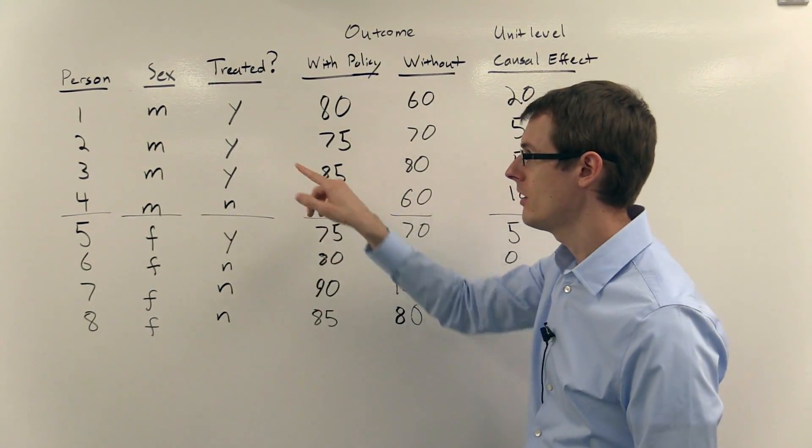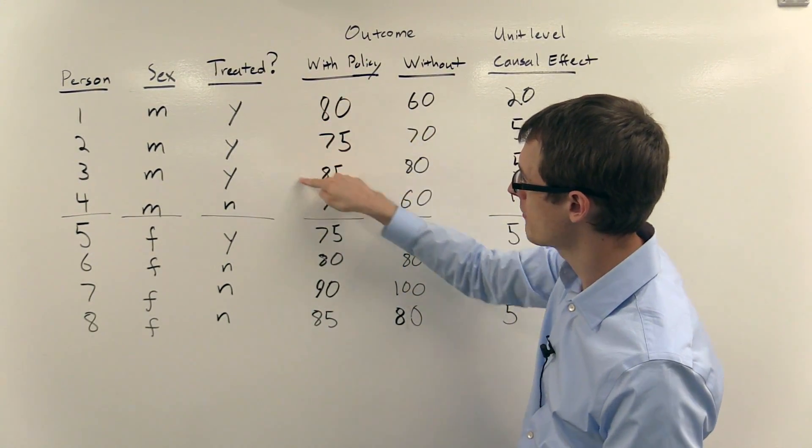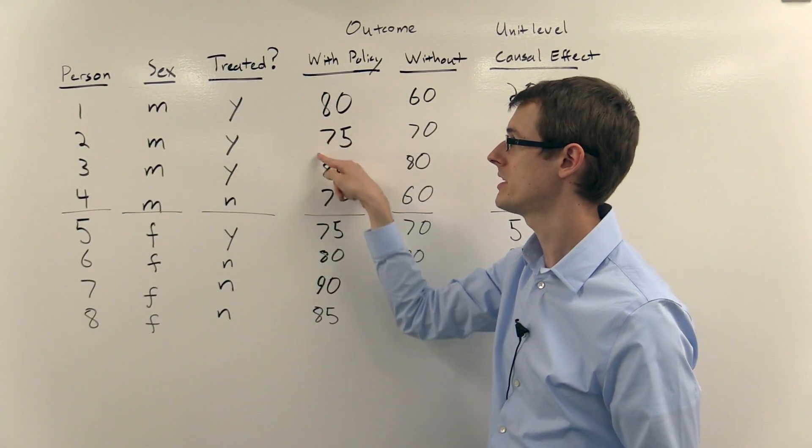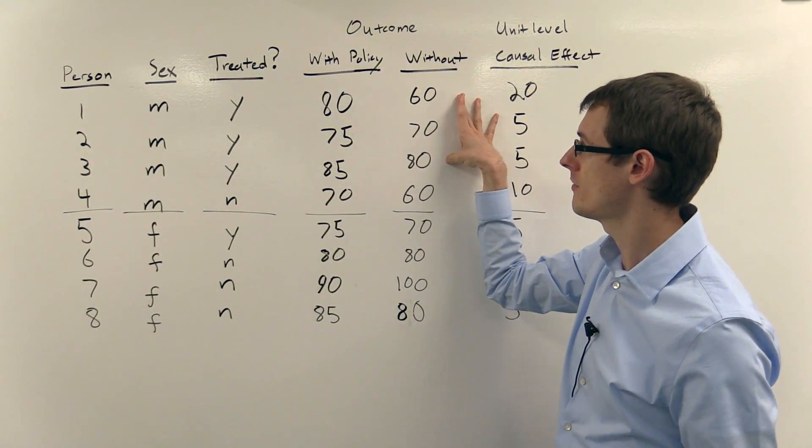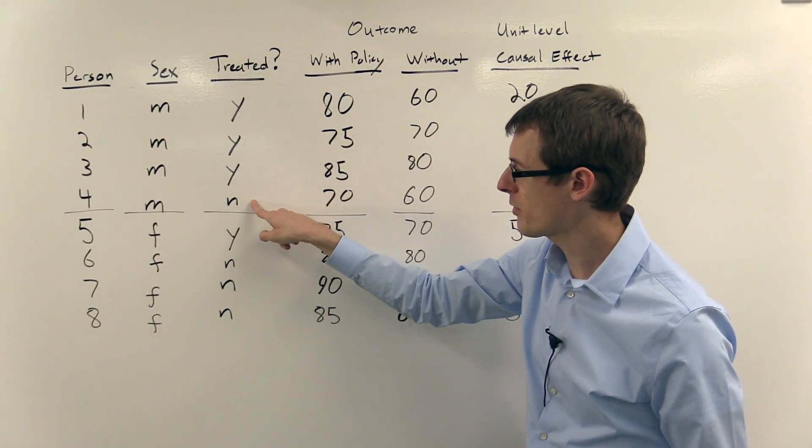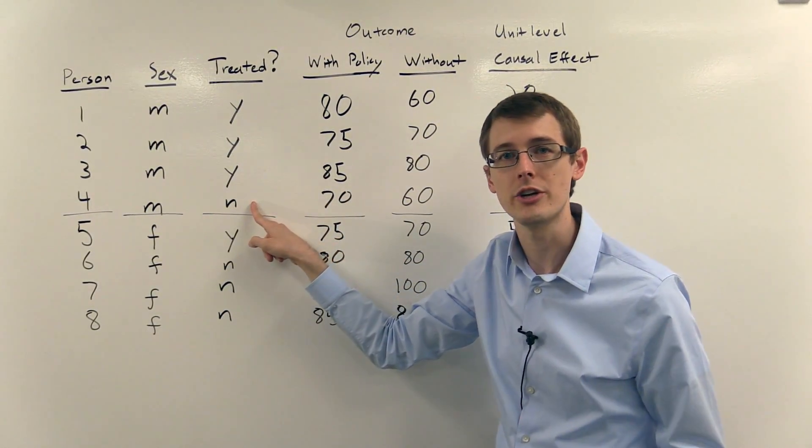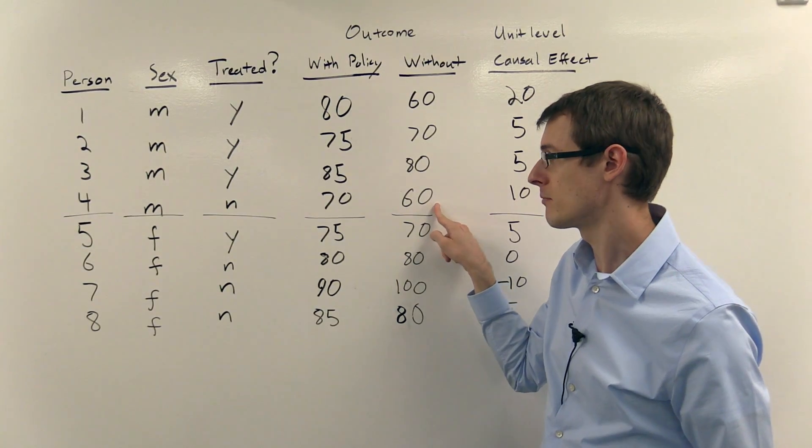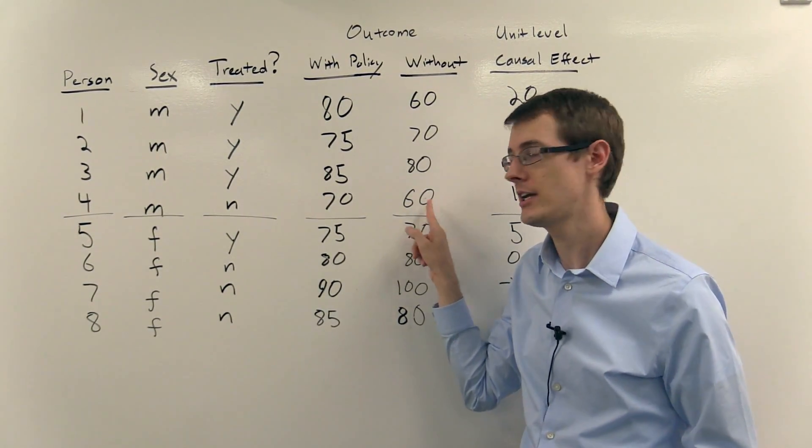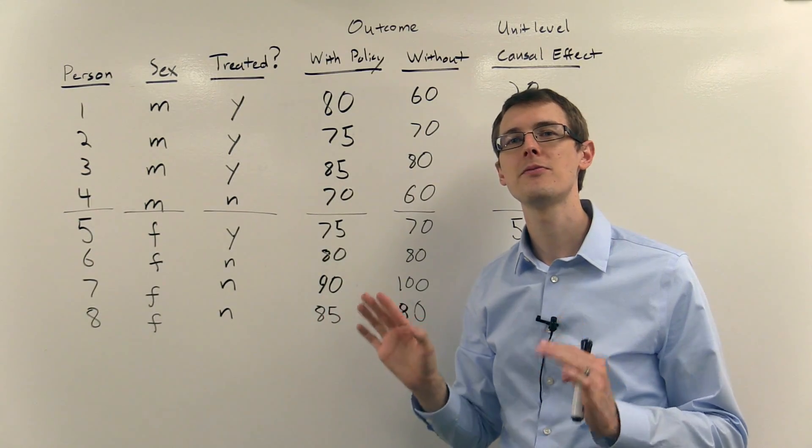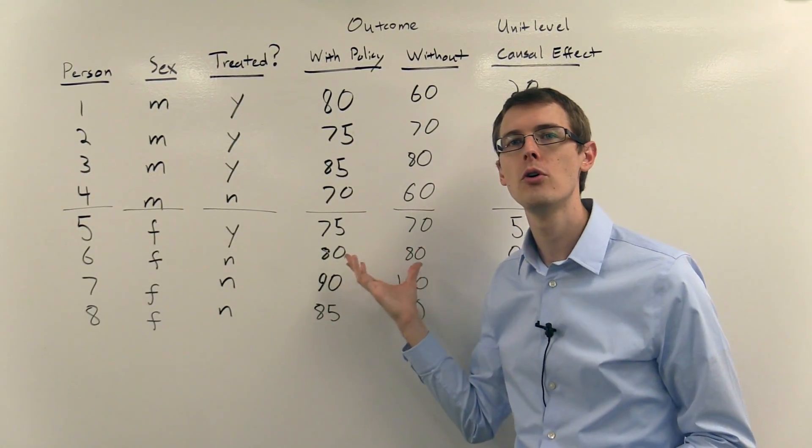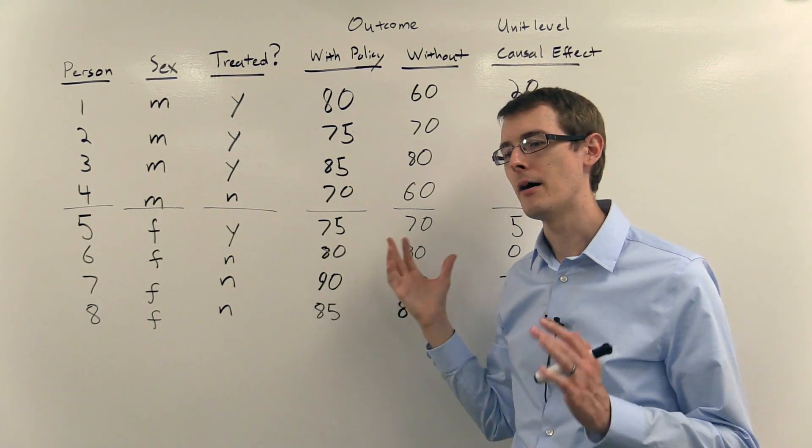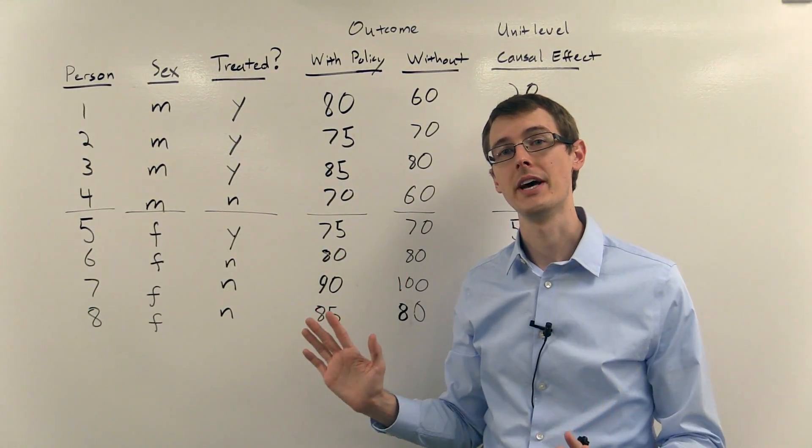So in real data, for these people we would only ever observe this number, what happened to them when they were treated, because they were treated. We would not observe these numbers. For this person who was not treated, we would observe this number, what happens when they're not treated, but not this number. But for the purpose of defining what effect we want, I've written out the full potential outcomes, even though we can't actually observe them in the data.